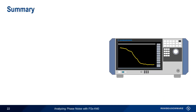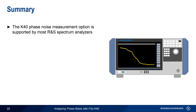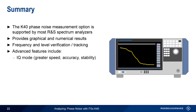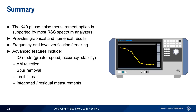In summary, the K40 phase noise measurement option is supported on most Rohde & Schwarz spectrum analyzers and enables user-configurable automated phase noise measurements. It provides standard single sideband graphical results as well as numerical results. The frequency and level verification and tracking function is very helpful when measuring drifting or unstable sources. Advanced features based on IQ data offer higher speed, better accuracy, and AM noise removal. Tools such as spur removal and limit lines aid in analysis, and the K40 option automatically calculates integrated or residual measurements of phase noise. This concludes our presentation, Analyzing Phase Noise with FSK40.